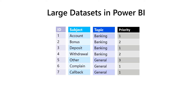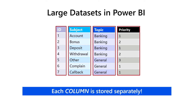VertiPaq is a columnar database. That means the data in each column is stored physically separated from the data in other columns. Based on the number of distinct values in the column, which is known as cardinality, data distribution — are there many repeating values in the column — and data type, numeric vs text, VertiPaq applies a specific algorithm to compress the data.